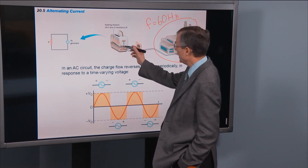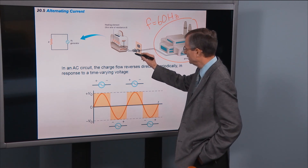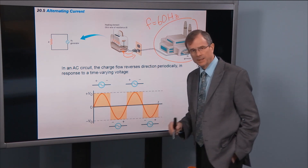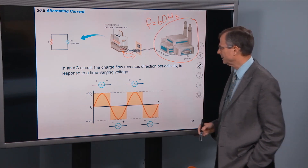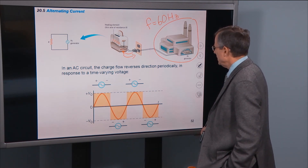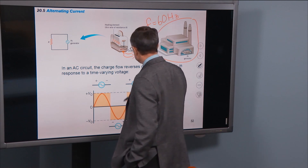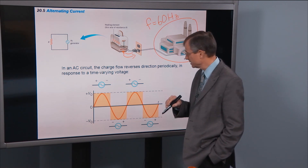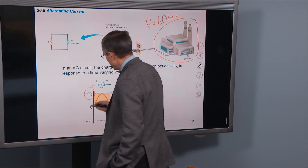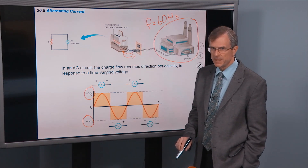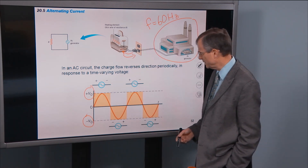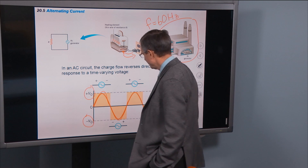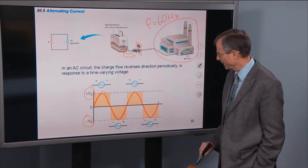That's powering this filament, with current coming through the front wire and alternating back and forth 60 times per second. If you look at the voltage as a function of time, the voltage across the outlet plugs would be oscillating back and forth between some maximum and some minimum, which we call V-naught or V-zero — sometimes positive, sometimes negative, alternating back and forth.